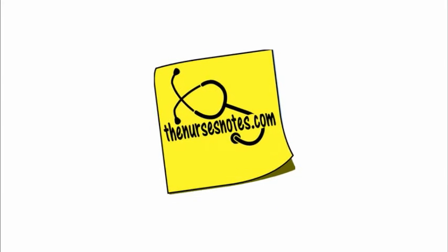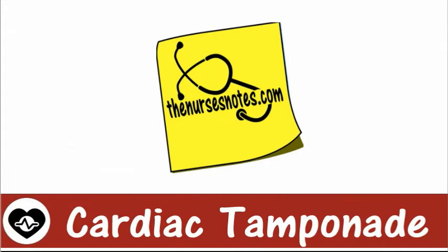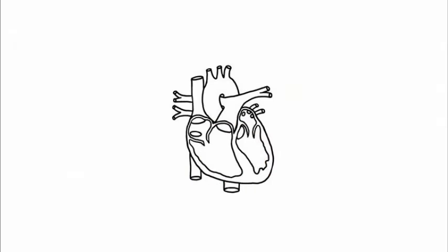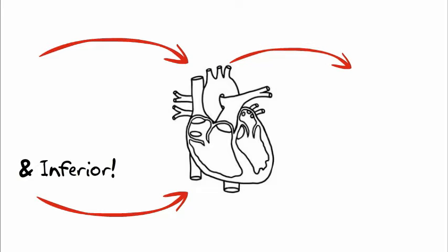Welcome to the Nurses Notes. This is Nurse Kevin and I'm going to talk to you about cardiac tamponade. In basic anatomy, the heart is pumping fine and we have normal hemodynamics. The blood is coming in through the superior vena cava, then exits out the aorta.